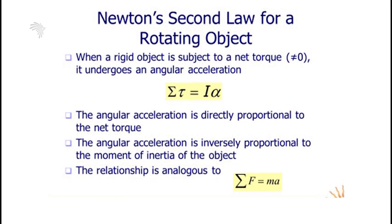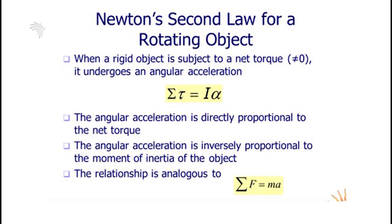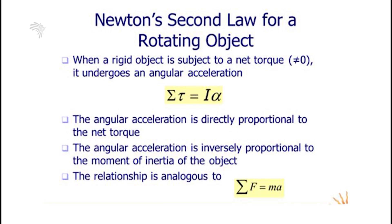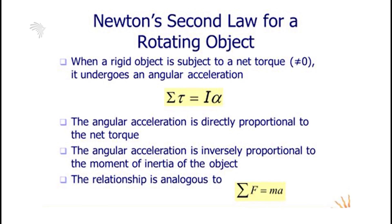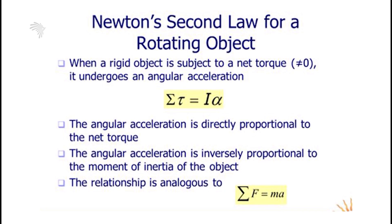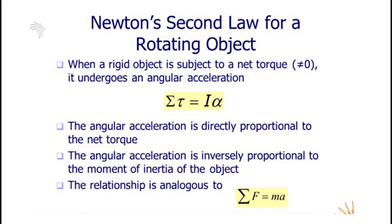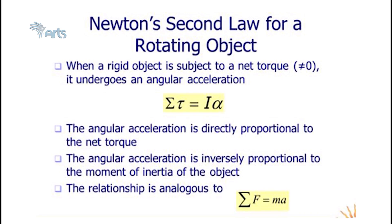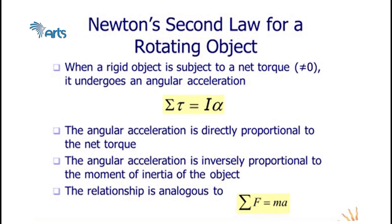For Newton's second law applied to a rotating object: in translational motion, net force equals mass times acceleration. When a rigid object is subjected to a net torque different from zero, it undergoes angular acceleration. The equation is net torque equals I times alpha, where I is moment of inertia and alpha is angular acceleration. This is directly analogous to Newton's second law, and angular acceleration is directly proportional to net torque.